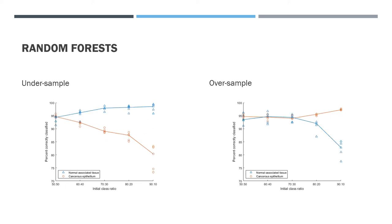However, with random forests, we get a different answer. Note how undersampling improves the normal-associated accuracy while the cancer samples become less well classified. However, with oversampling, we get the opposite effect. The cancer samples get better, but the normal-associated fall away. This is worrying, because it means we could get a different answer depending on the choice of algorithm and the choice of sampling method.